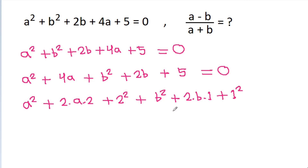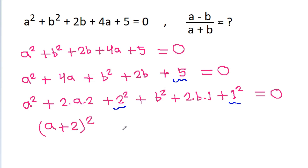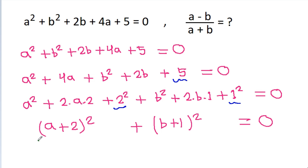So we have added 4 and 1, which accounts for the 5, making the equation equal to 0. Then a squared plus 2 times a times 2 plus 2 squared is (a plus 2) whole squared, and b squared plus 2 times b times 1 plus 1 squared is (b plus 1) whole squared, so (a plus 2)² plus (b plus 1)² equals 0.